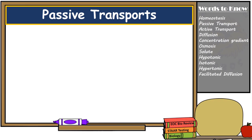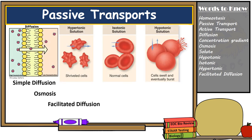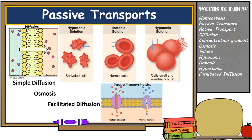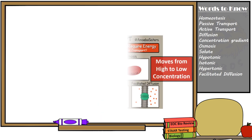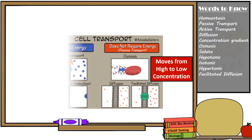Passive transport consists of three different forms: simple diffusion, osmosis, and facilitated diffusion. Remember that osmosis refers specifically to the movement of water based on the solute concentration found outside the cell, and facilitated diffusion uses either protein channels or carrier proteins to transport certain substances across the membrane. All three forms of passive transport move substances from high to low concentration across the cell membrane without using any energy.